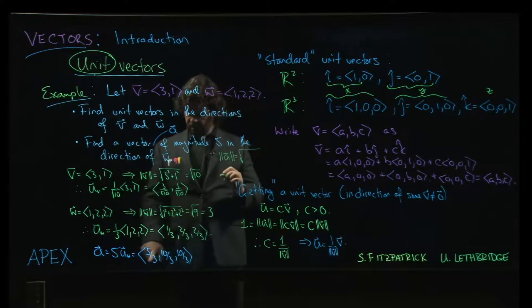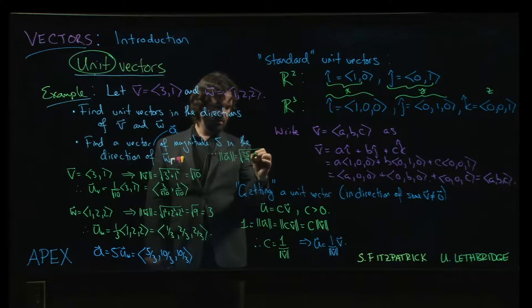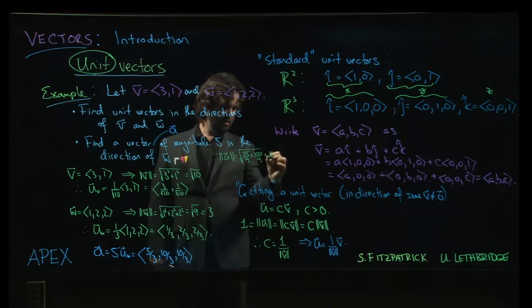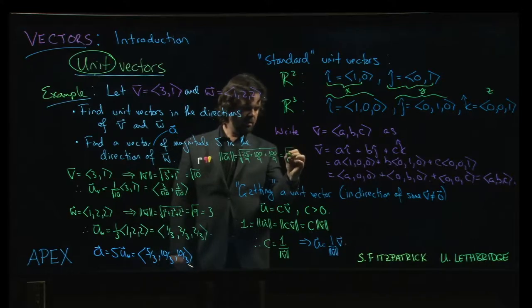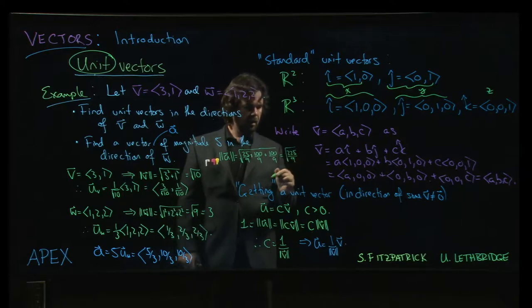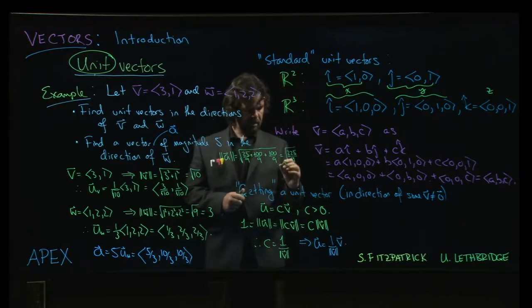We would get 5/3 squared, so 25 over 9, 100 over... 3 squared, or sorry, 10 over 3 squared is 100 over 9, and then 100 over 9. Okay. So, the square root of 225 over 9. Now, 225 happens to be divisible by 9, conveniently enough.